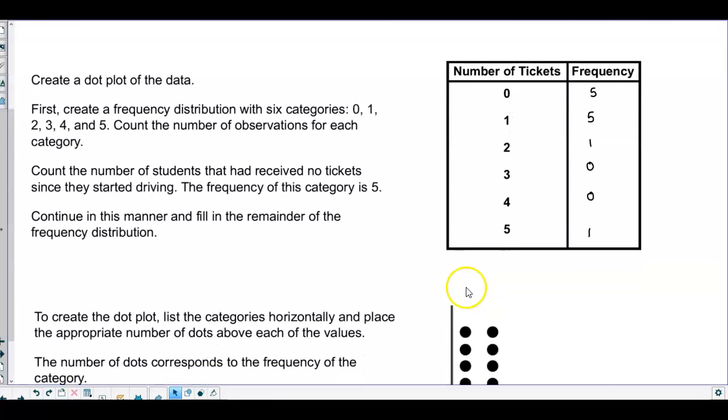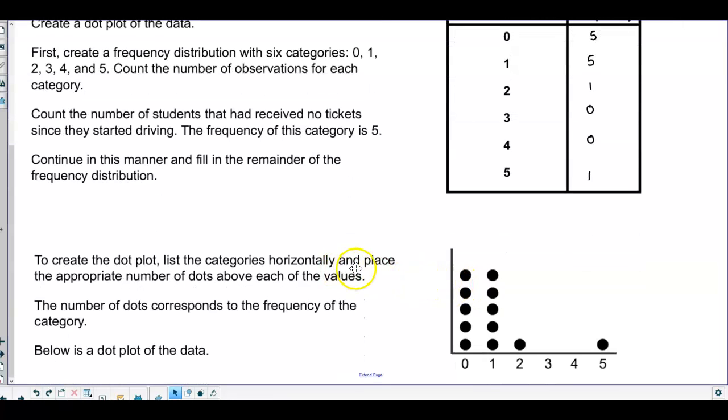So then now to create the dot plot, you're going to list the categories horizontally and place the appropriate number of dots above each of the values. So we go from zero, one, two, three, four, five.